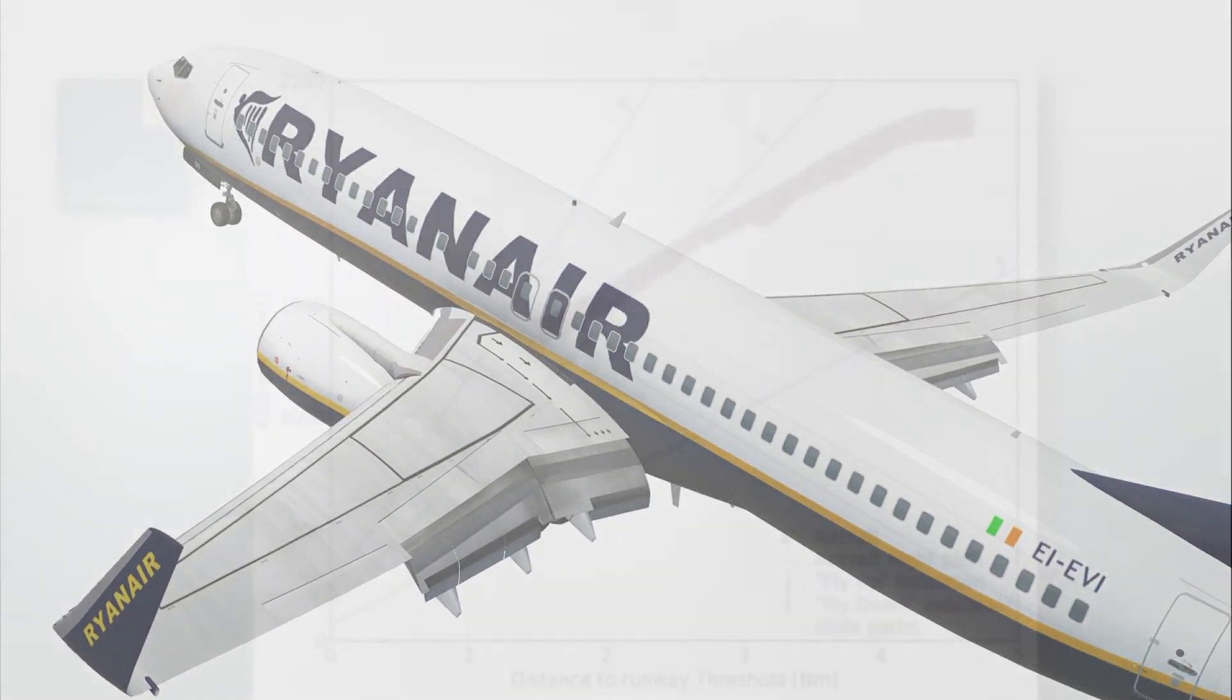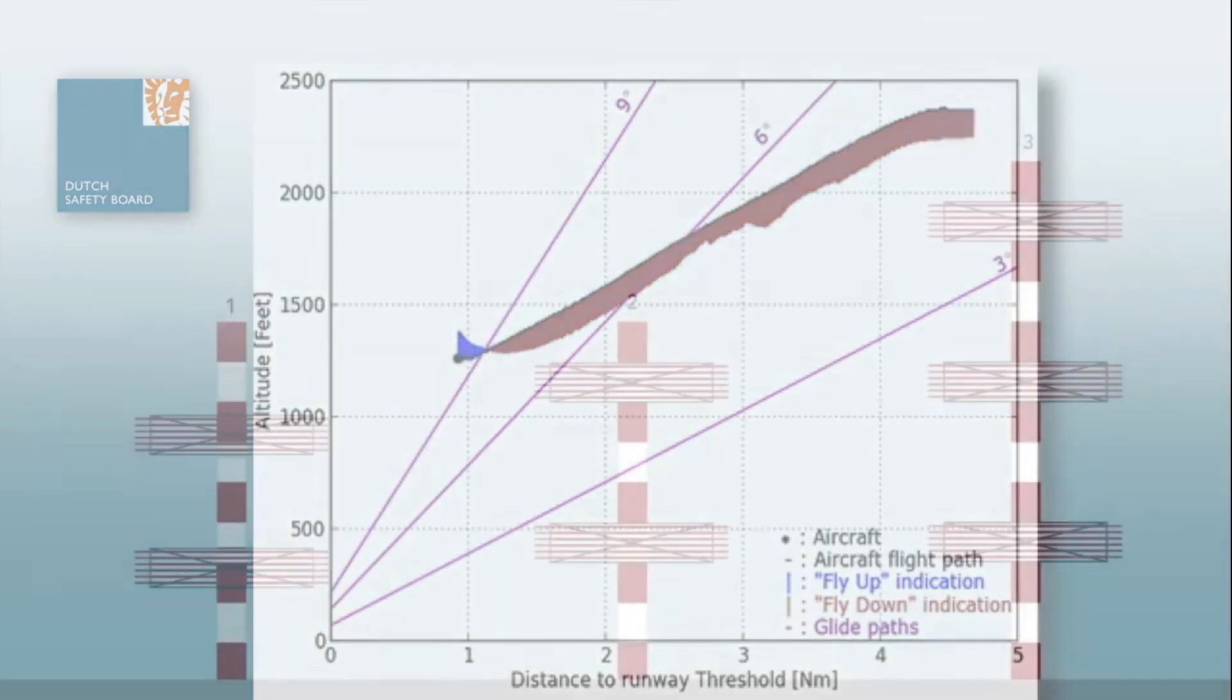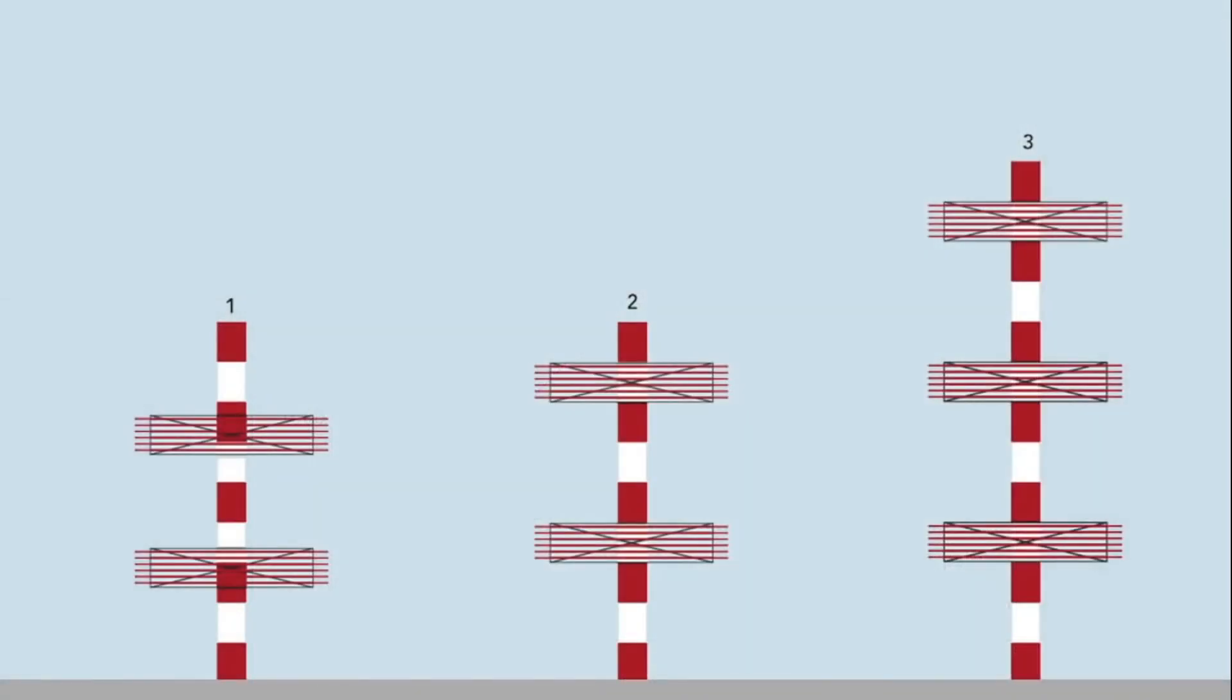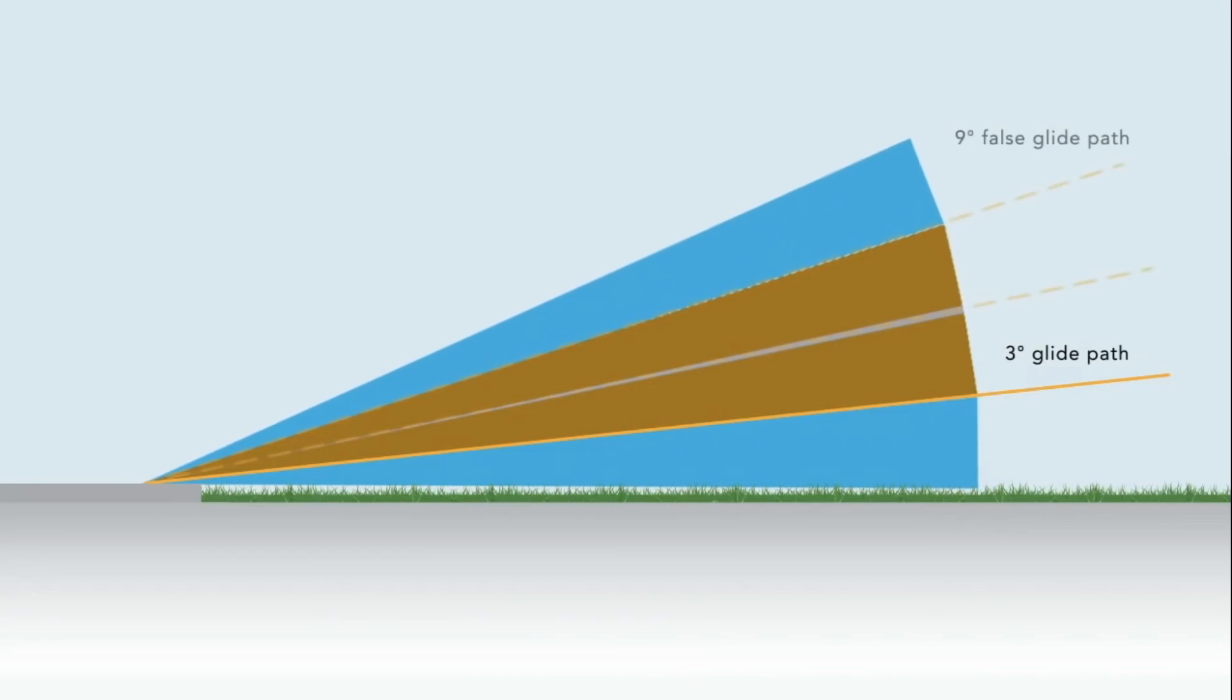During the course of the investigation by the Dutch Safety Board, test flights were performed to measure the glide slope field. In these test flights, the circumstances leading to the incident could be reproduced. Furthermore, the measurements on three different ILS antennas showed that with this type, a reversal was always present on the 9 degree glide path and sometimes present on the 6 degree glide path.